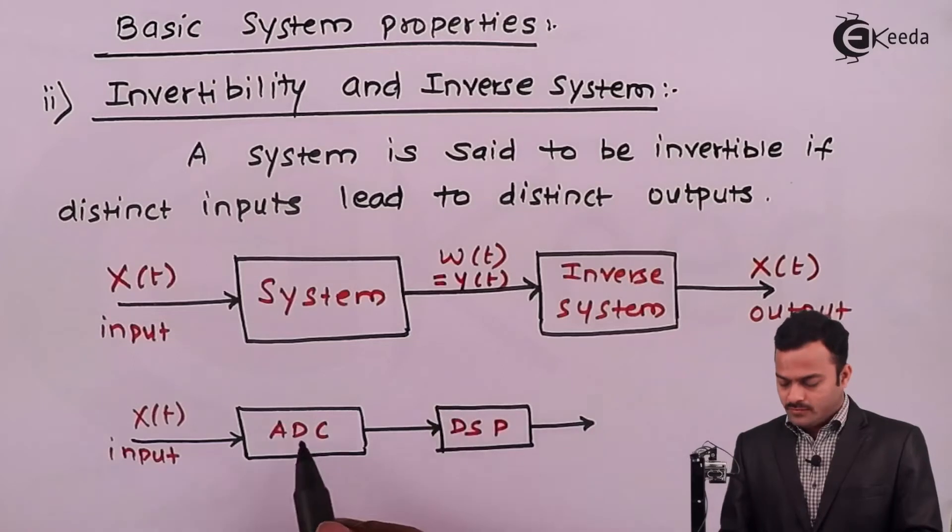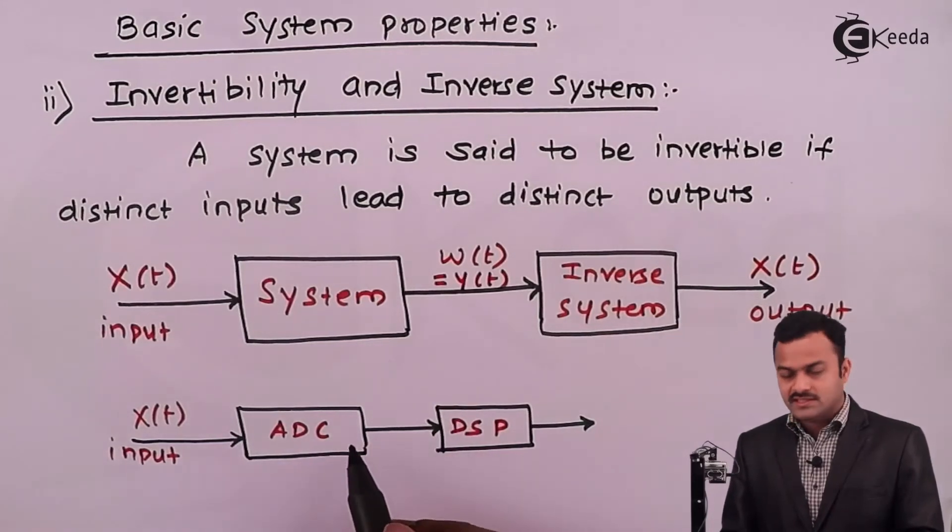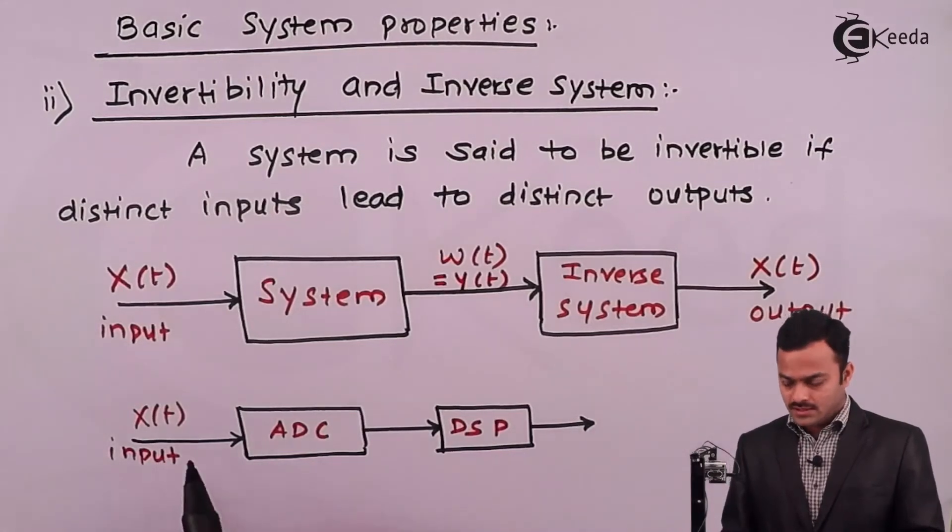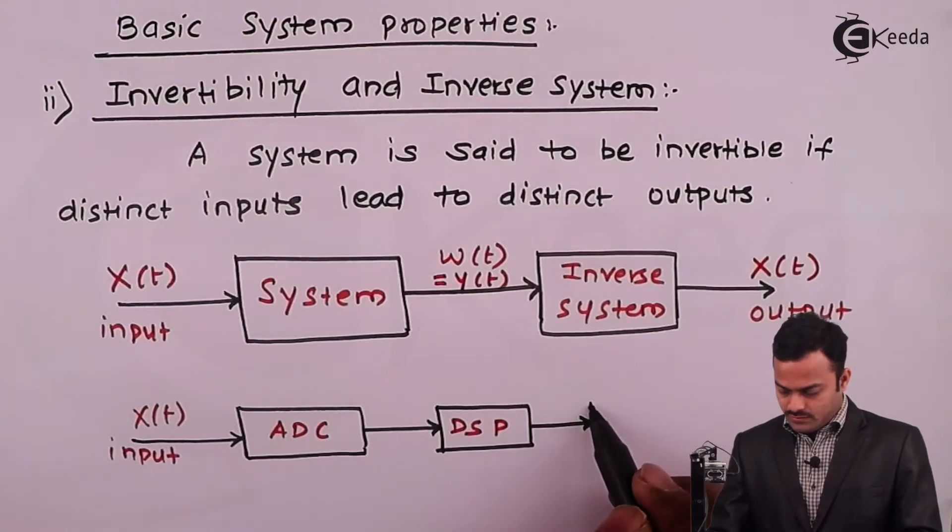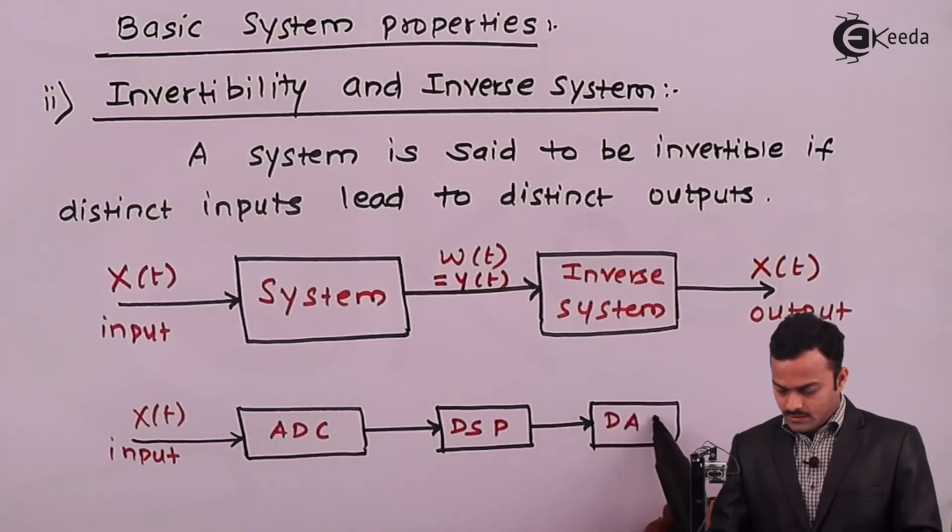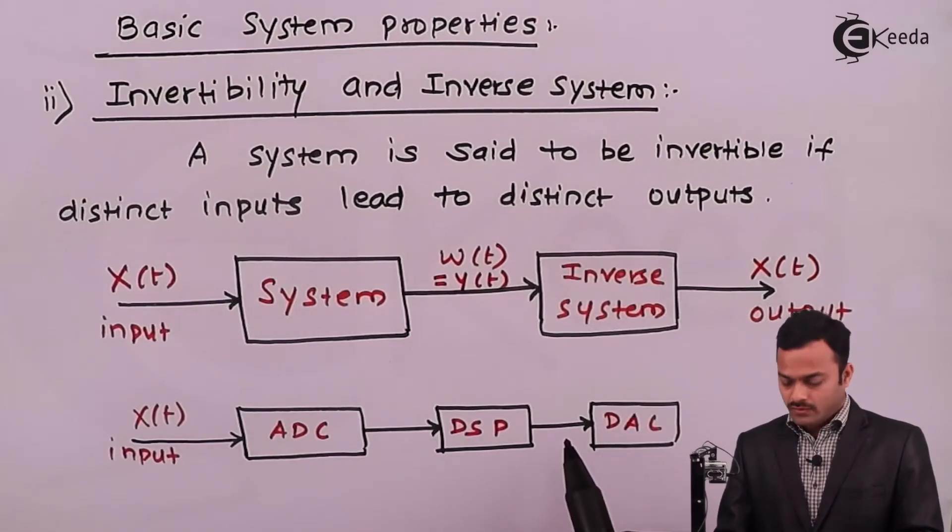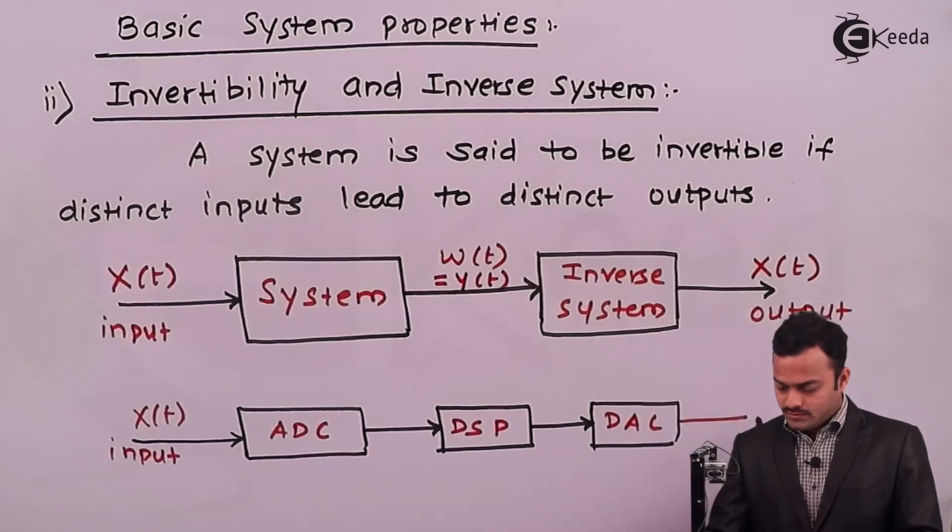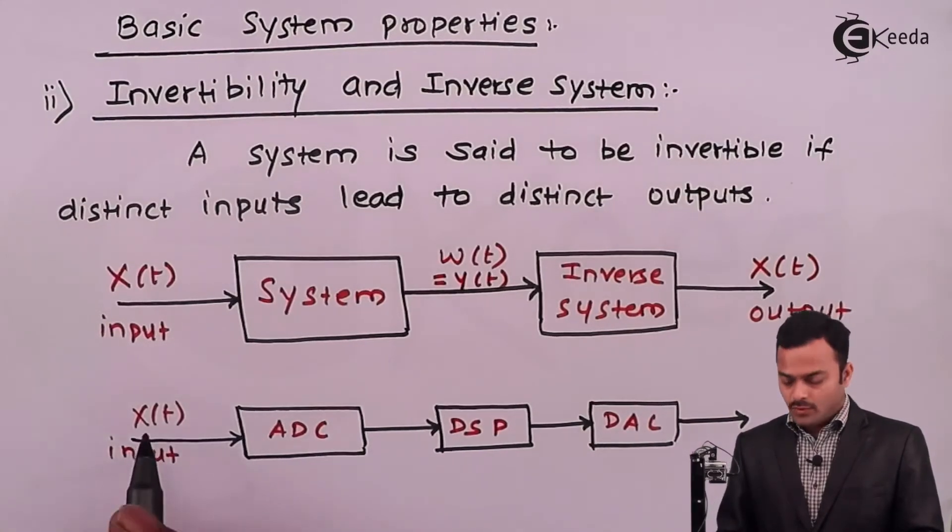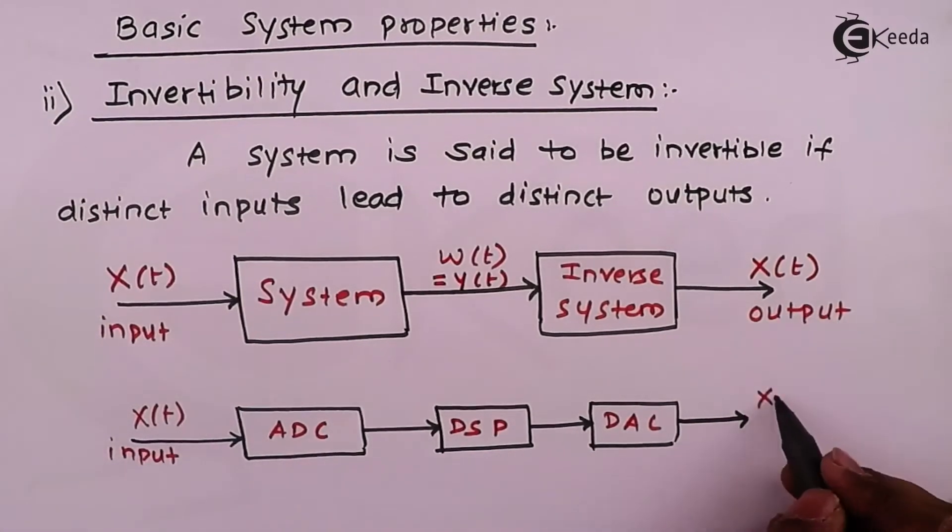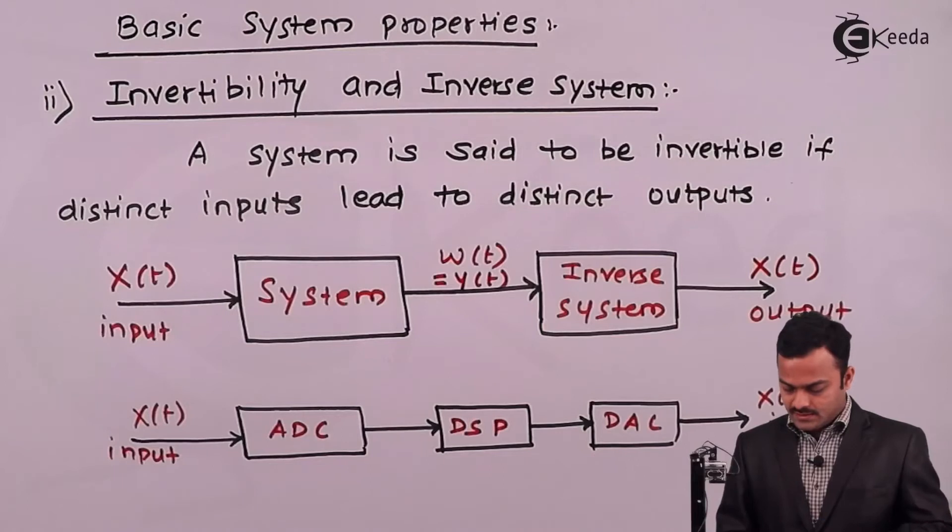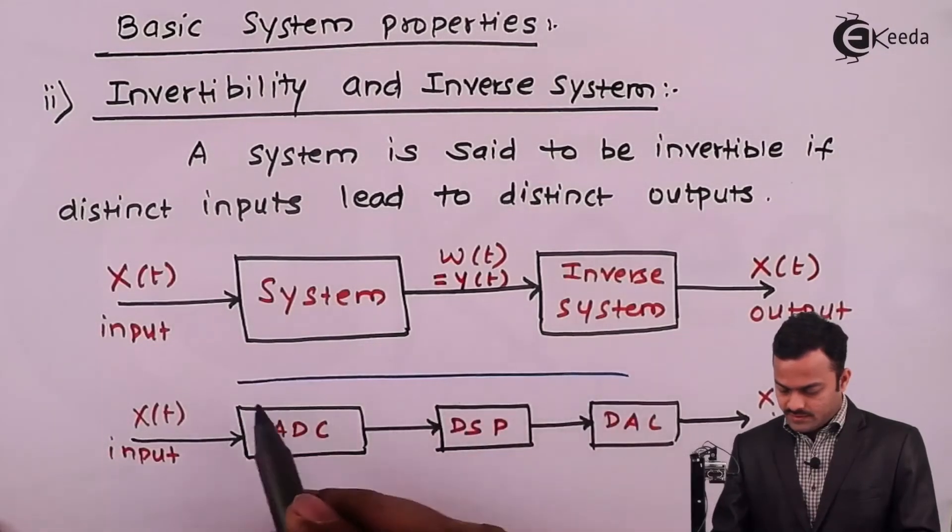So DSP will perform all the necessary procedures on the digital signal. But in the end I should be able to get the same continuous input signal. So over here I need to use DSP which will convert the processed signal. So what we want in the end, it should give us a signal which is same or correlated with the input signal only. So this can be considered as a system with an inverse system.